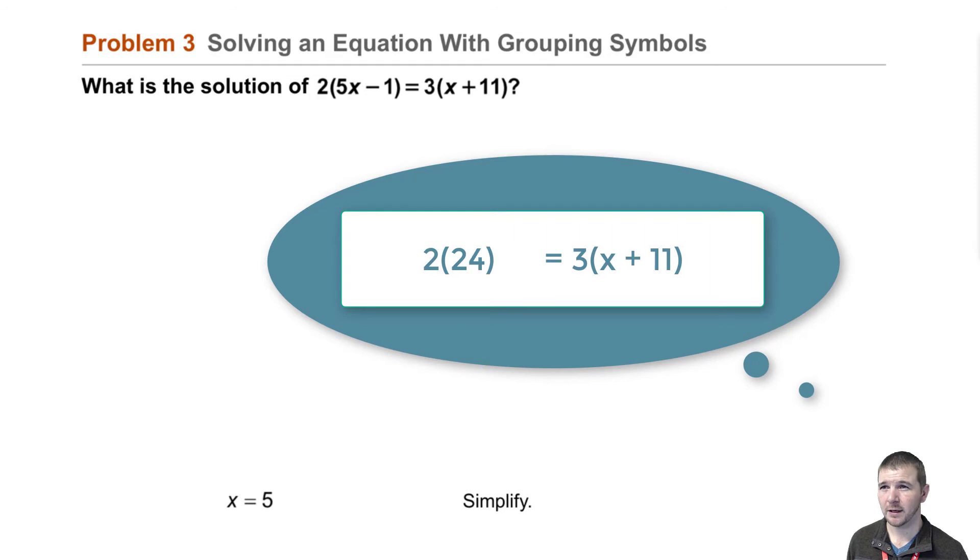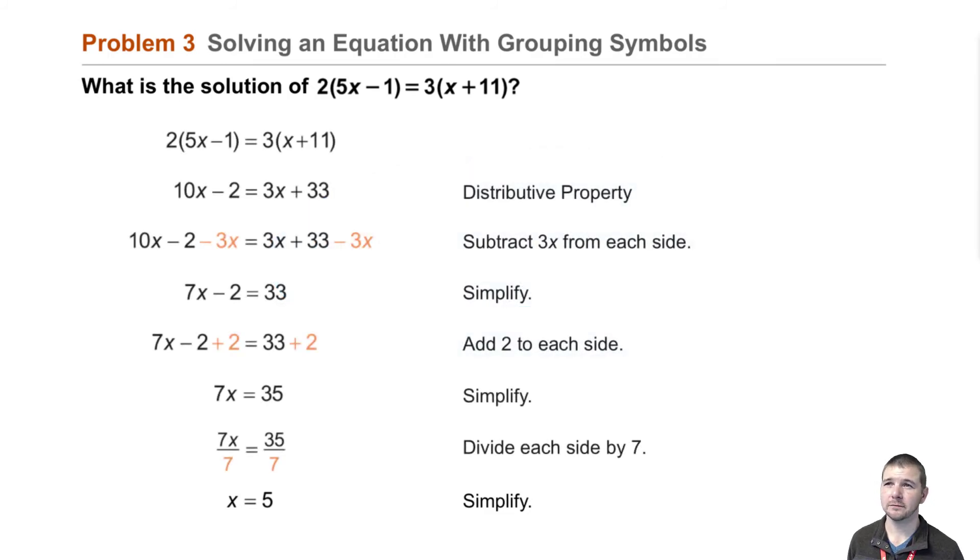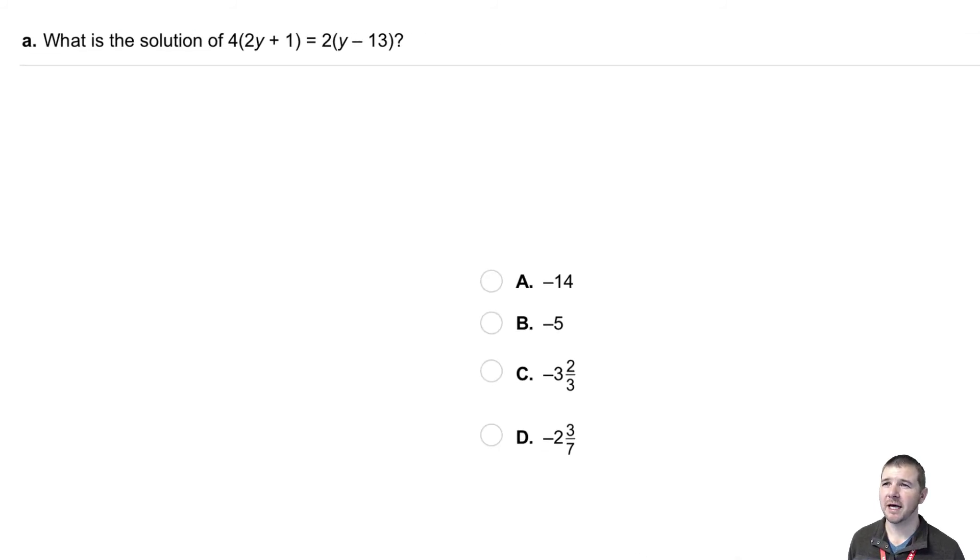So on the left-hand side we have 48. On the right-hand side, 5 plus 11 is 16, 16 times 3 is 48. So our solution checks out.